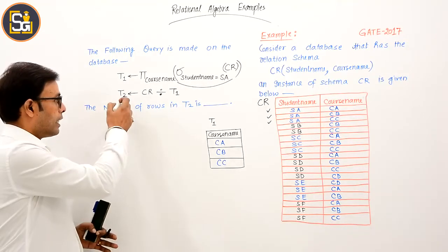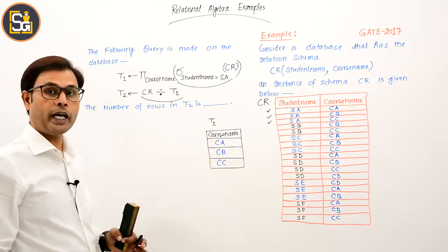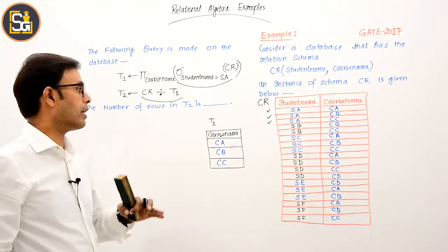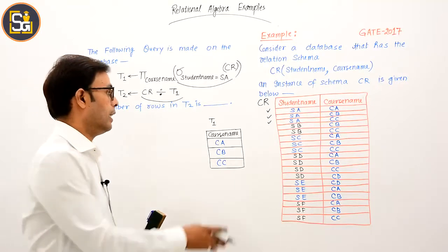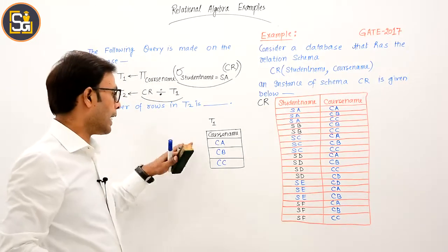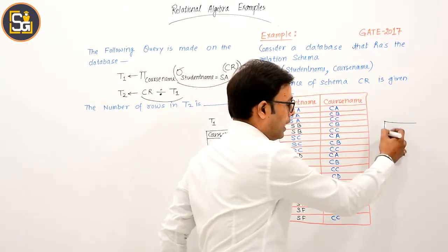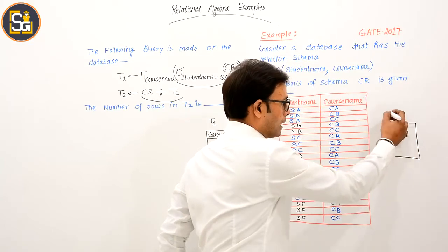Now what is being done: T2 equals CR division T1. CR division T1 means division operator. So how is this division operator performing its operation? Let me do one thing - let me draw this table on this side.